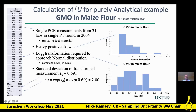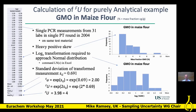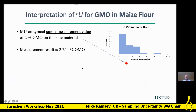Applying the formula: the standard uncertainty factor is the exponential of 0.69, which is 2. The expanded uncertainty factor is the exponential of 2 × 0.69, which is 3.98 — basically 4. So this is quite a large uncertainty factor.